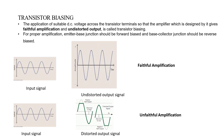We are aware of the term biasing when we study a simple p-n junction diode. In a p-n junction diode, we talk about forward biasing and reverse biasing. In forward biasing, the p-terminal is connected to the positive terminal of the battery and the n-terminal is connected to the negative terminal. This kind of biasing is called forward biasing.